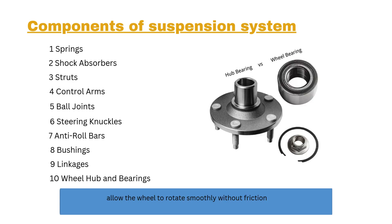Number ten: wheel hub and bearings. The wheel hub holds the wheel and tire in place, while the bearings, press-fit into the hub, allow the wheel to rotate smoothly without friction.